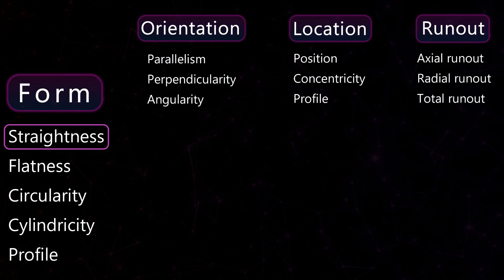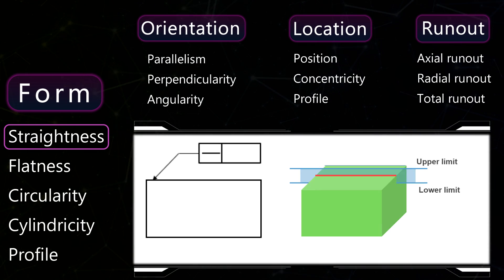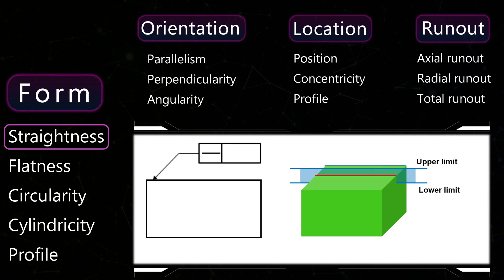Straightness. The tolerated line should lie between two parallel lines. The distance between these two lines is the tolerance value.